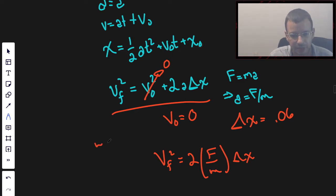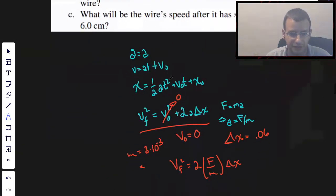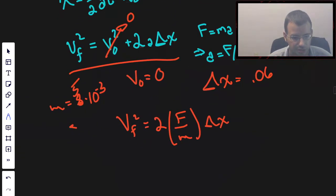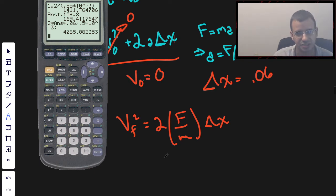And we know that M equals 5 times 10 to the negative third, because it's 5 grams. I think we can do this. So we're going to do 2 times force, which is the previous answer, times 0.06 divided by quantity 5 times 10 to the negative third.